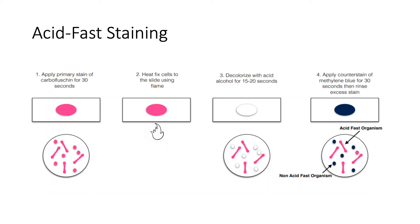Next, we have acid-fast staining. The procedure for this is different from your gram stain reaction. First, you apply your primary stain, which is carbofuchsine. This stain is pink or reddish in color. Then, instead of adding iodine, you use heat as your mordant, followed by decolorization with your acid alcohol. Then finally, you apply your counterstain, which is methylene blue.